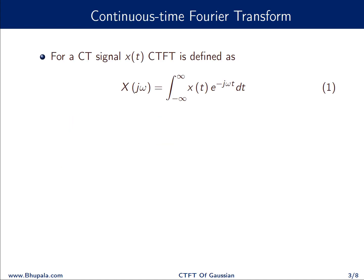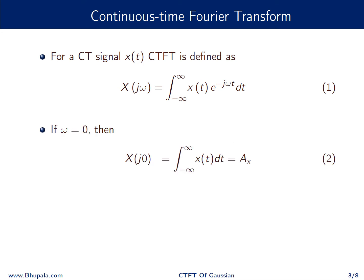First, let us define the continuous time Fourier transform. For any signal x(t), the Fourier transform is defined as X(jω) = integral from minus infinity to infinity of x(t) e^(−jωt) dt. Now if you replace ω with 0, we get X(j0), where e^(−jωt) becomes 1, and hence we get the expression which is the area of the time domain signal x(t).